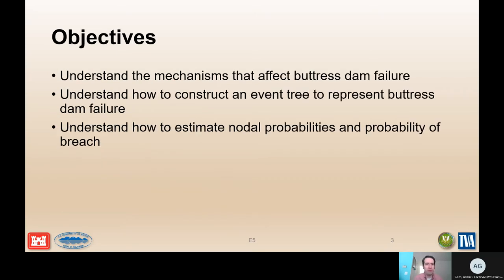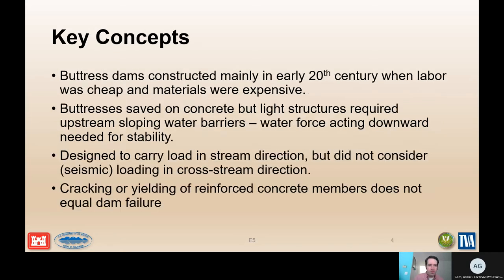The objectives are that we want to understand the mechanisms that affect buttress dam failure, how to construct an event tree, and estimate the nodal probabilities of that event tree related to failure of a buttress dam. Buttress dams were constructed mainly in the early 20th century when labor was cheap and materials were expensive. The buttress saves on concrete, but the light structure requires an upstream sloping water barrier to use the pool to increase the vertical force down into the foundation.